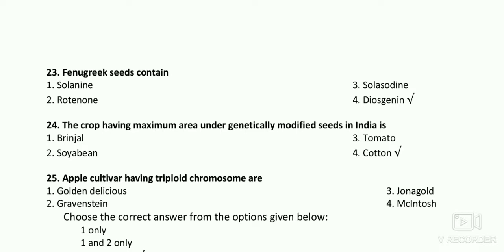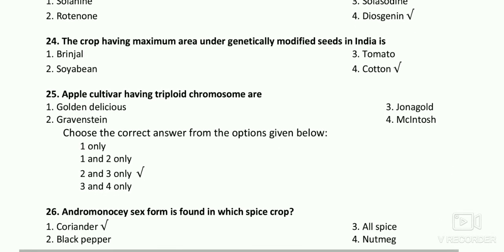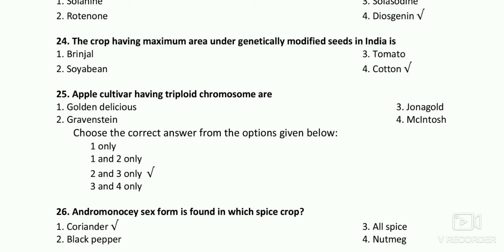The crop having maximum area under genetically modified seeds in India is cotton. Apple cultivars having triploid chromosomes — the right answers are Gravenstein and Jonagold (options two and three). Baldwin, Mutsu, and Rhode Island Greening are also triploid. Jonagold's parent is Golden Delicious crossed with diploid Jonathan, not triploid.